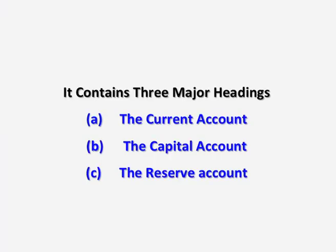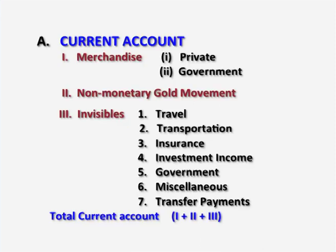It contains three major headings: the current account, the capital account, and the reserves account. These are the main components of a BOP. In the current account, we have three major divisions known as merchandise, non-monetary gold movement, and invisibles.